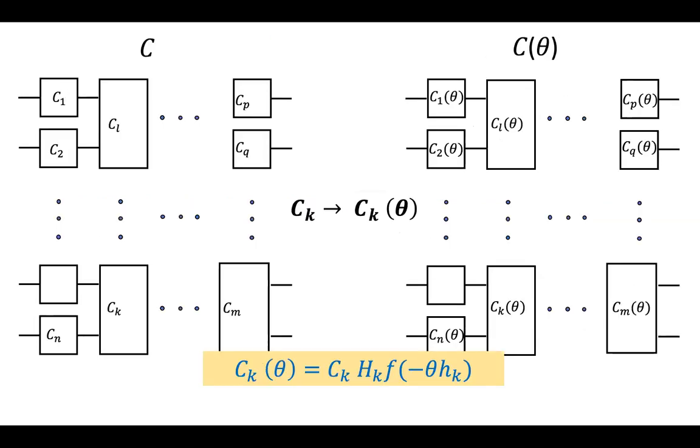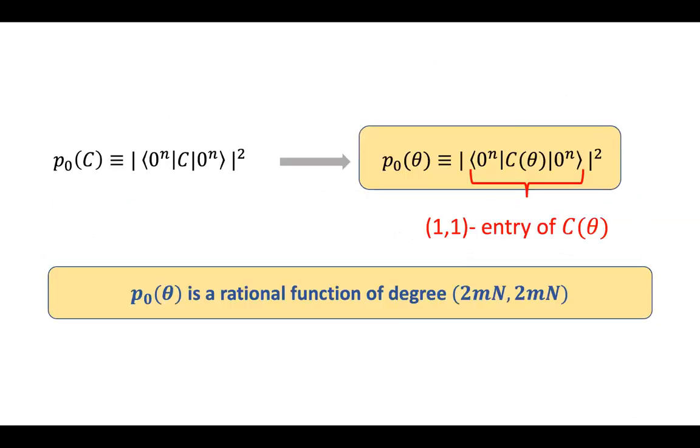Where I remind you that every word the deformations are done locally. So we respect the architecture of the circuit and the Cayley path is applied to every one of the paths, every one of the gates. And once I take the absolute value squared, well, the degree just doubles. So it becomes 2mN, 2mN.